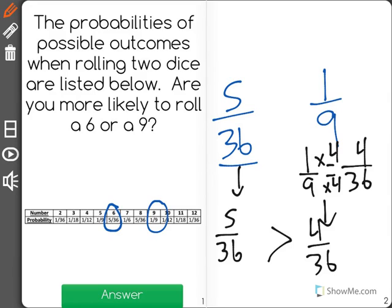Showing me that 5 out of 36 is greater, meaning that we are more likely to roll a 6 than we are to roll a 9.